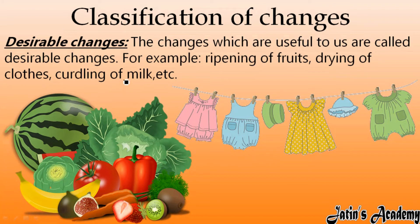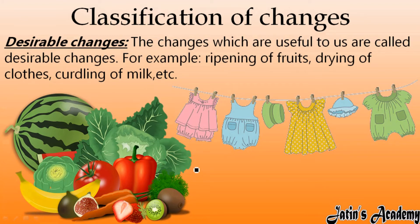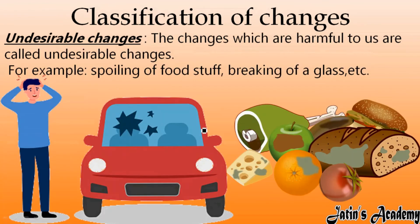The third example is curdling of milk. When milk converts into curd, that is also desirable for us — we need that curd, so that is a desirable change. Any other examples you can also write according to your choice. Next we are having undesirable changes.